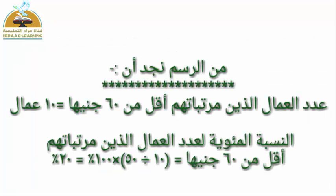The question asked: how many workers have salaries less than 60 pounds? We find there are 10 workers. And the required percentage: 10 out of the total which is 50, multiplied by 100, equals 20%. So I have now obtained the ascending cumulative frequency table and answered the required questions.